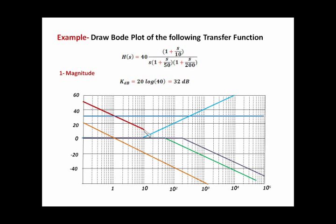Once we hit frequency 10, we add plus 20 dB per decade from the zero, so minus 20 plus 20 equals zero slope — a flat line until the next corner frequency at 50. After 50, we add minus 20 dB per decade, giving minus 20 dB per decade until we hit frequency 200. After 200, we add another minus 20, giving minus 40 dB per decade. This is the Bode magnitude plot.